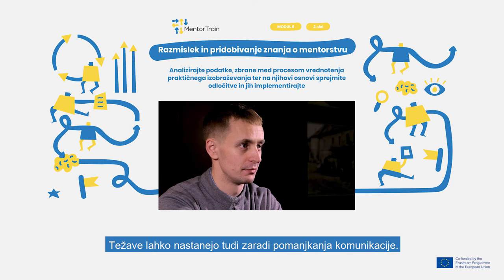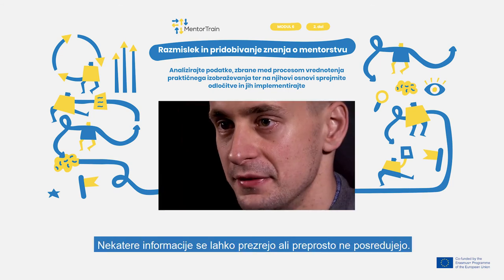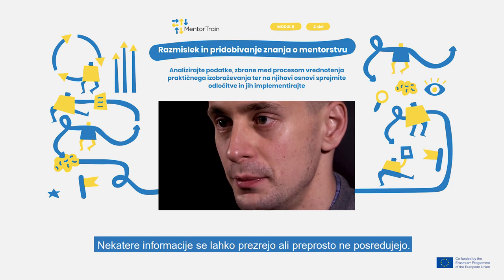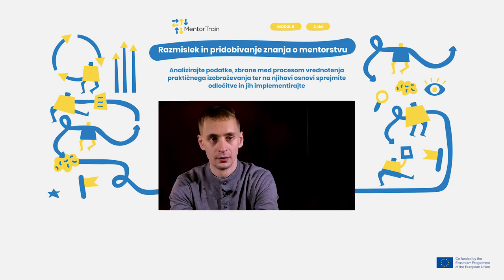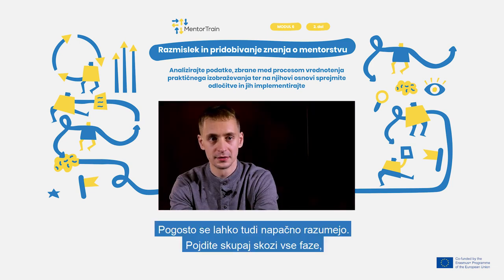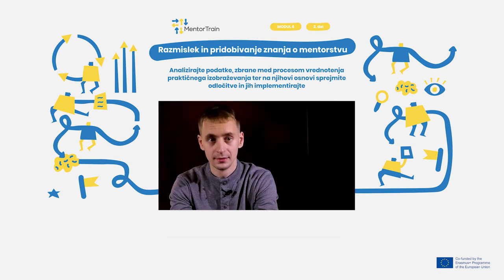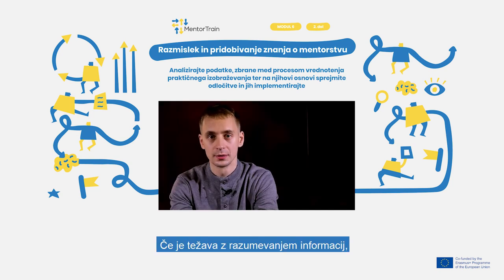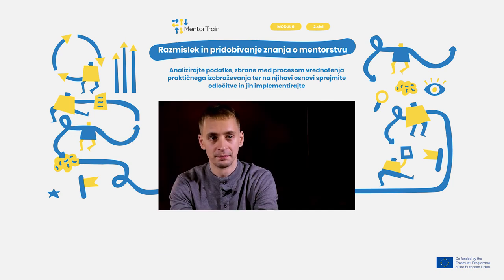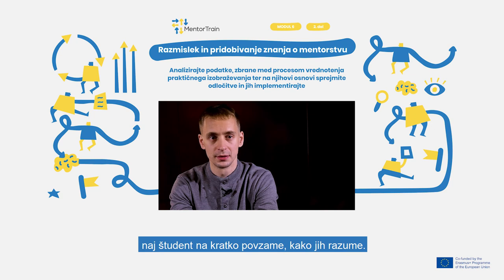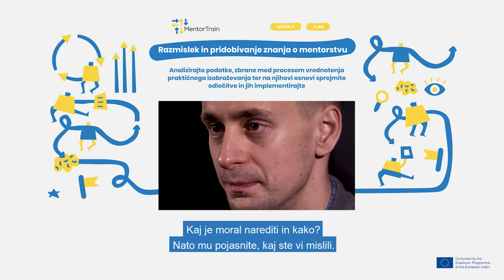Often problems can arise from simply a lack of communication. Some information can be left unnoticed or is simply not communicated, and often information can be misunderstood. Go through it step by step and see where the problem started. If the problem was about understanding the information, let the student make a short summary of how they understood it, what they had to do and how, then explain how you meant it.